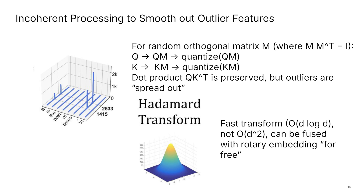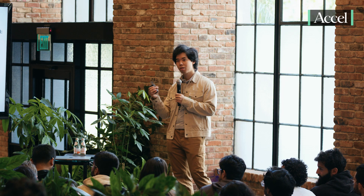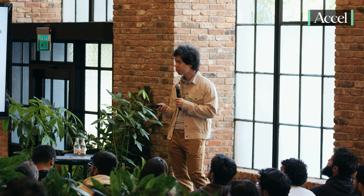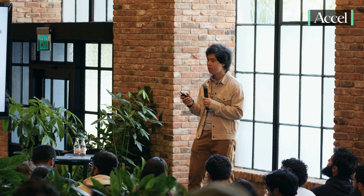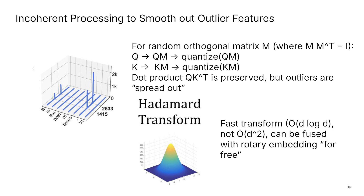How do we deal with features that have very large magnitude? If you just quantize naively, you suffer a lot of quantization error. What you can do is rotate everything by an orthogonal transformation and spread things out evenly. You take a random orthogonal matrix M — meaning M times M transpose is the identity — and you rotate the query, transforming Q to Q times M before you quantize, and do the same for K. Because M is orthogonal, the dot product Q times K transpose is preserved, but because it's a random rotation, all the features are spread out and you reduce numerical error. In practice, we can use things like the Hadamard Transform, a special class of orthogonal matrices, to do the rotation in order D log D instead of D squared. This can be fused with things like rotary embedding so that it essentially costs you nothing.